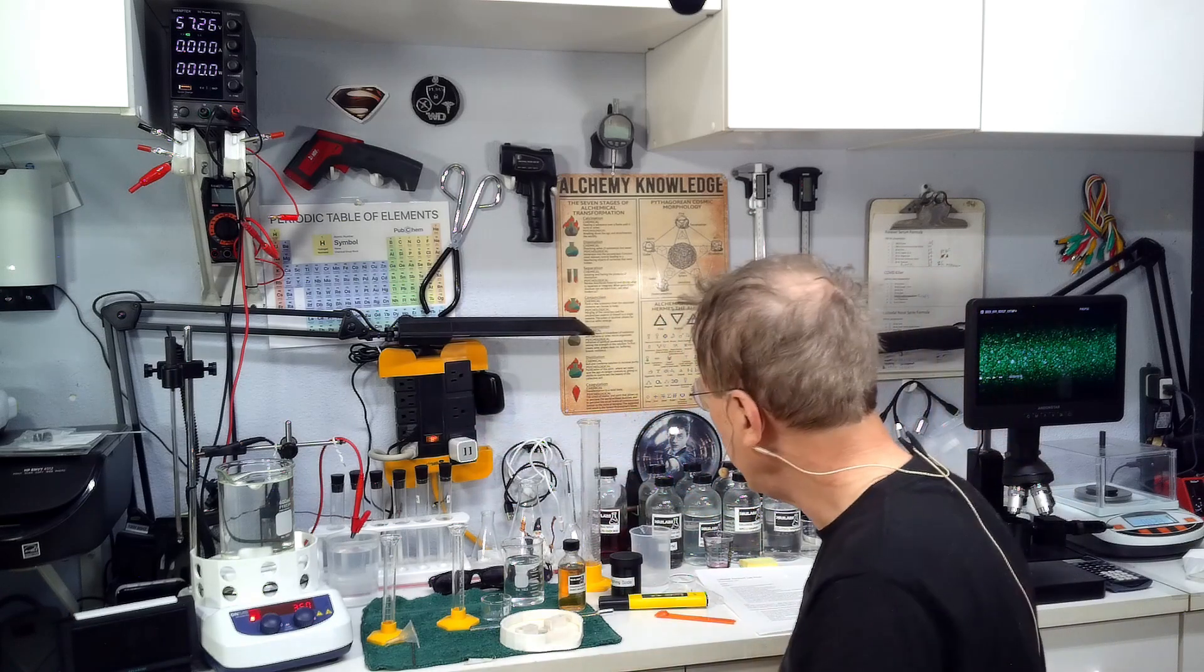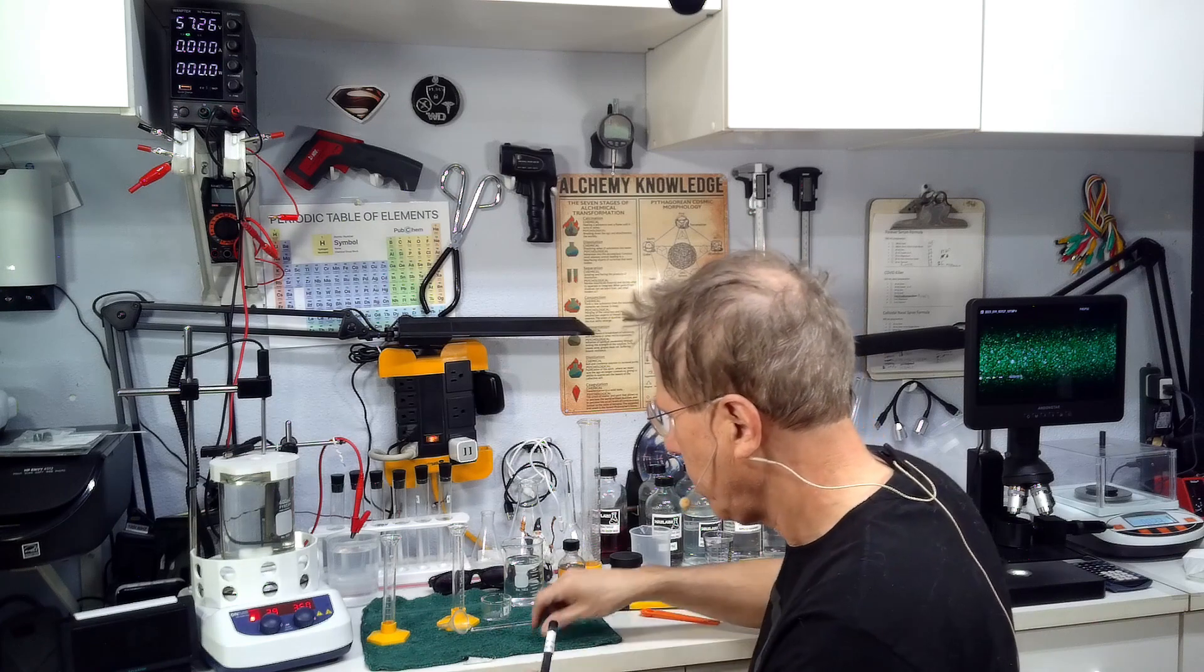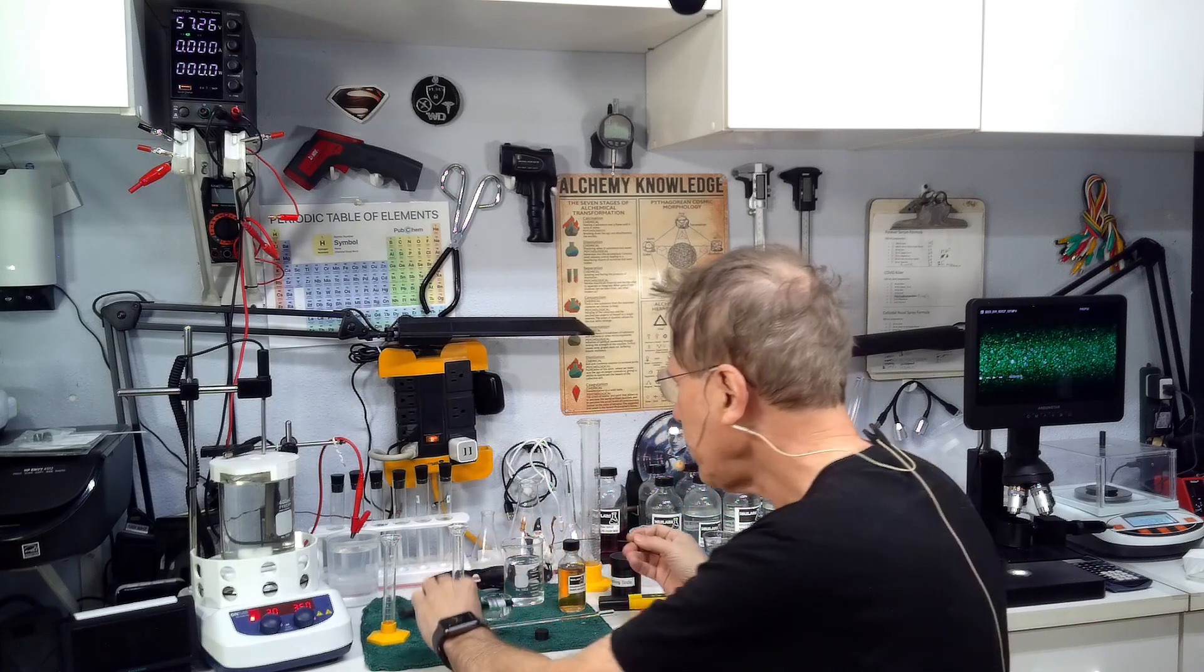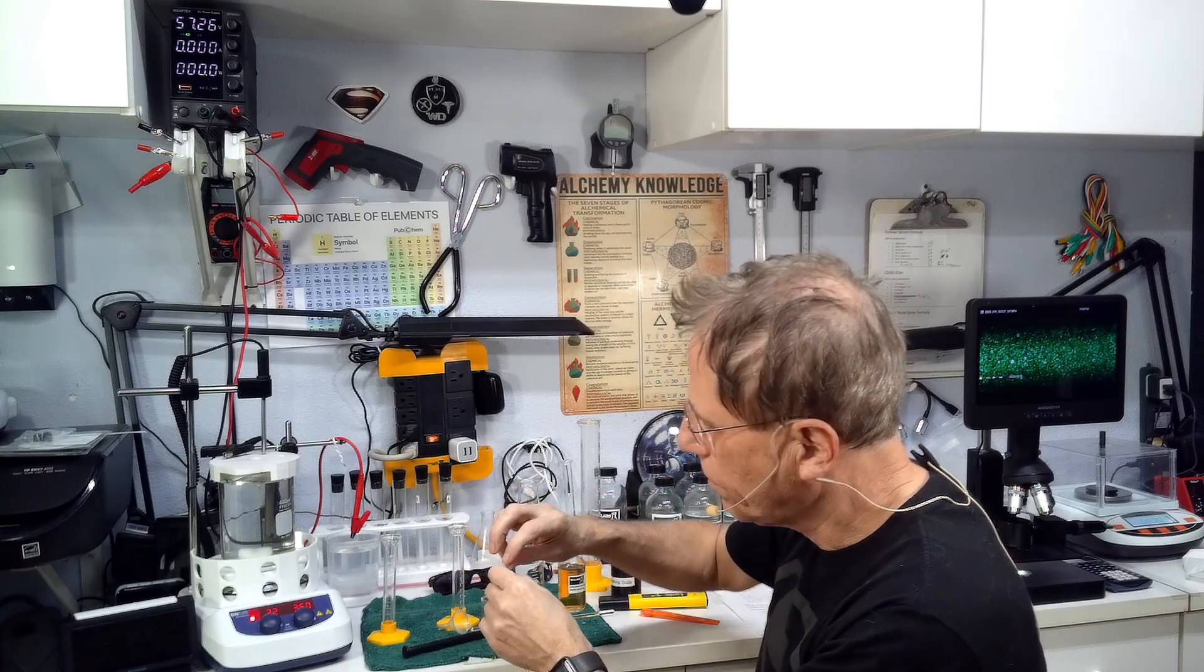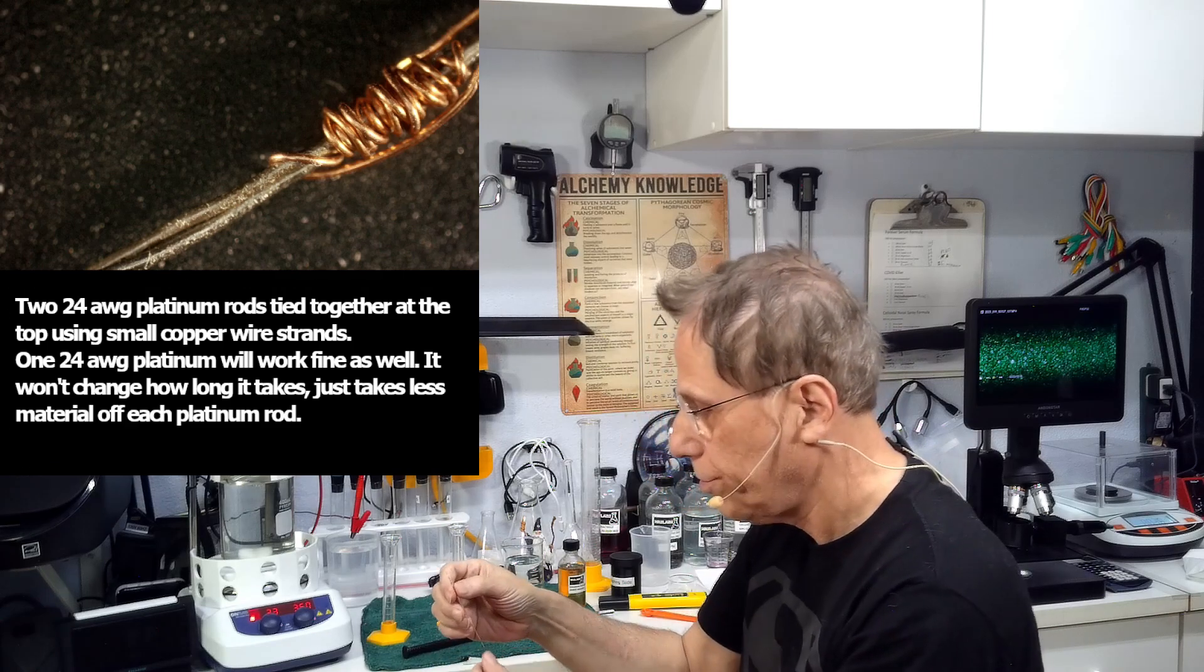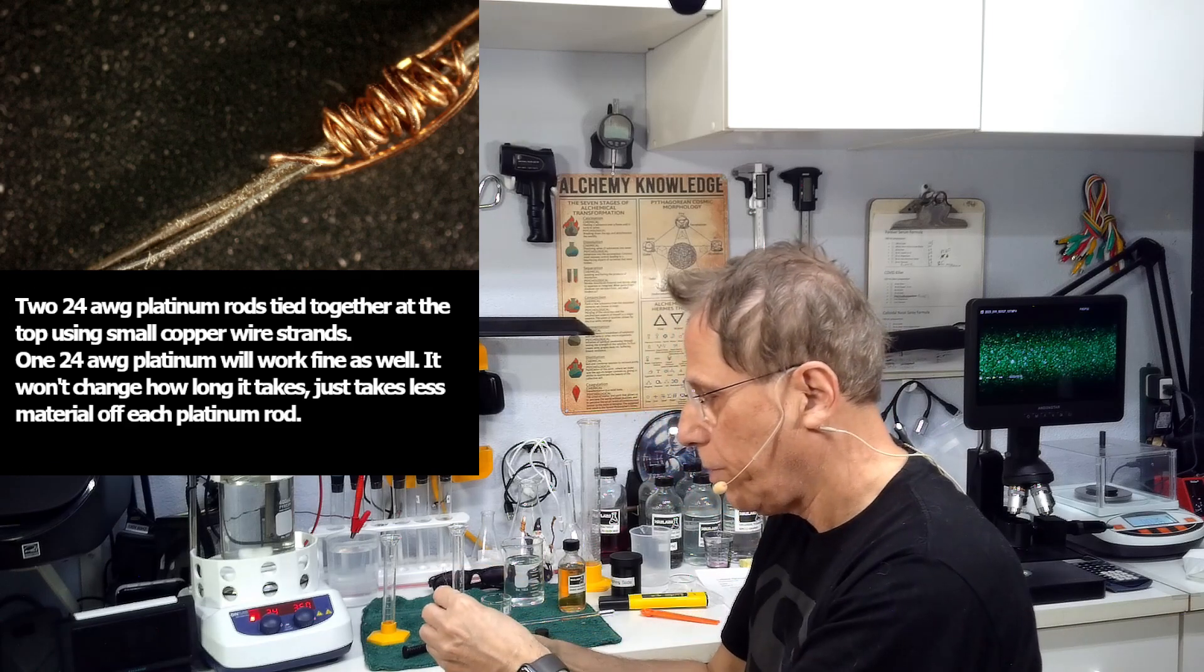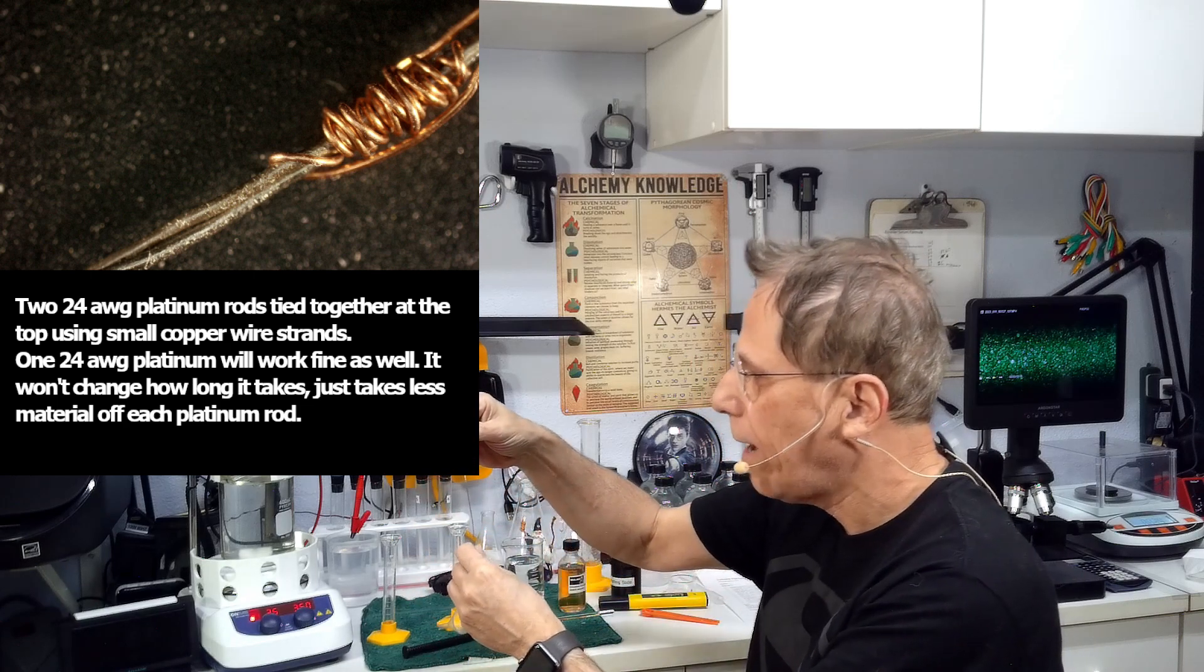We're going to let like 100 milliliters of that boil away, and then when it starts dropping below 500 milliliters, you're going to start putting this in to keep the pH high and to keep the fluid up. This is my platinum rod. I'm using two platinum rods.